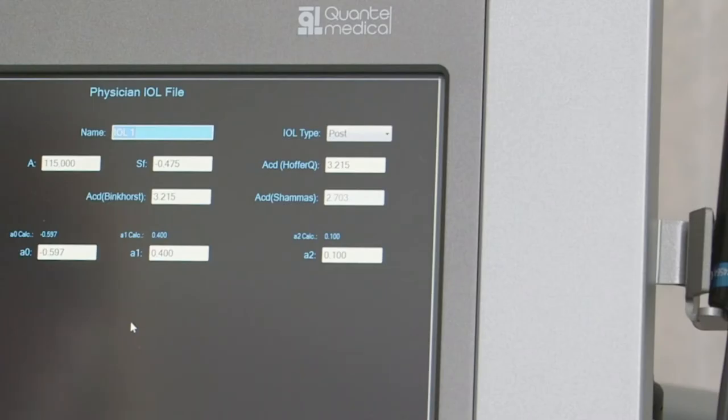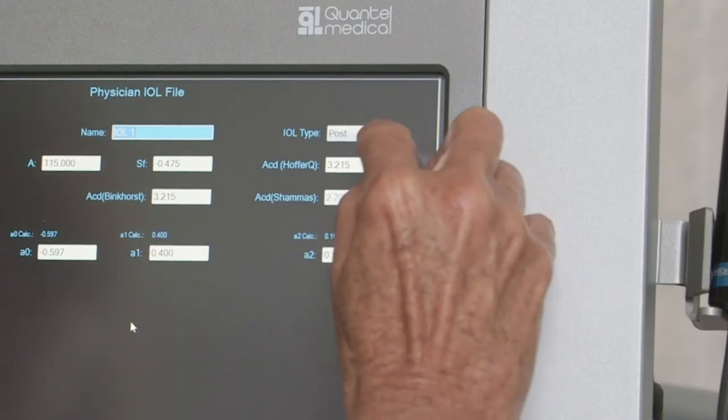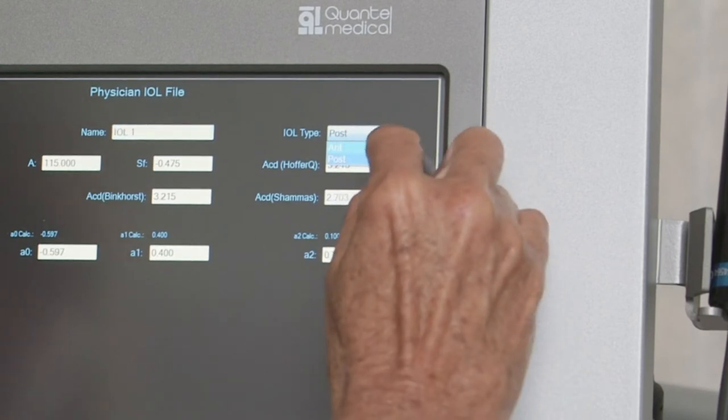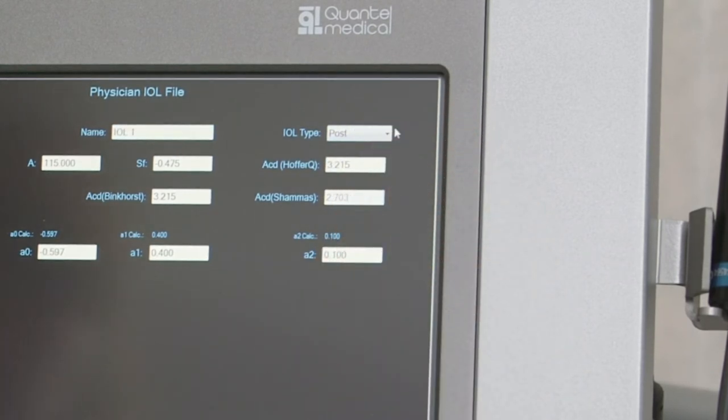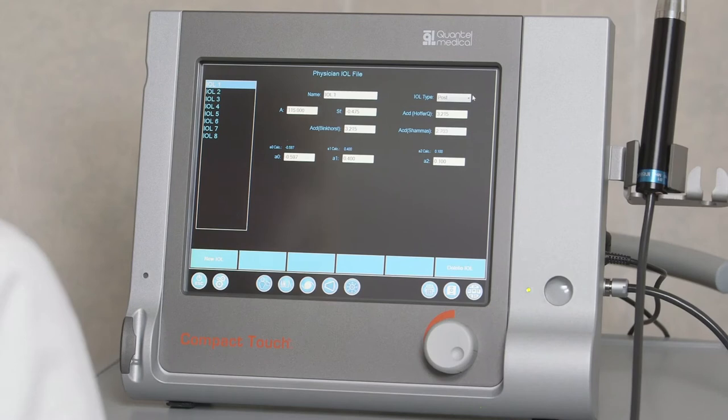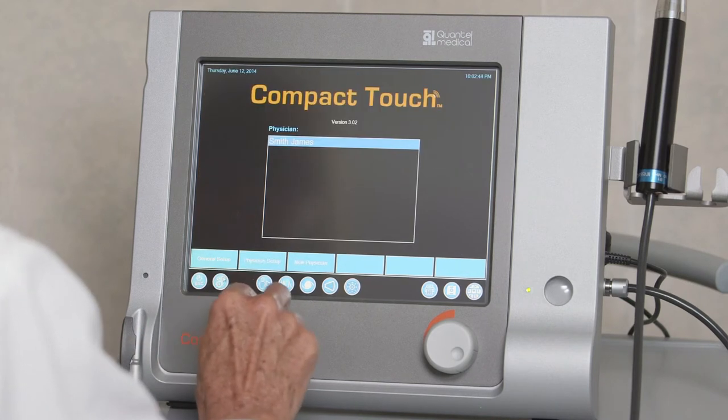In Biometry mode, the Compact Touch can calculate up to four IOLs at a time. Using the pull-down menus on the IOL Setup page allows the examiner to enter IOL information and choose an IOL power calculation formula. The examiner can also create, modify, or delete an IOL file by selecting IOL File on this page.